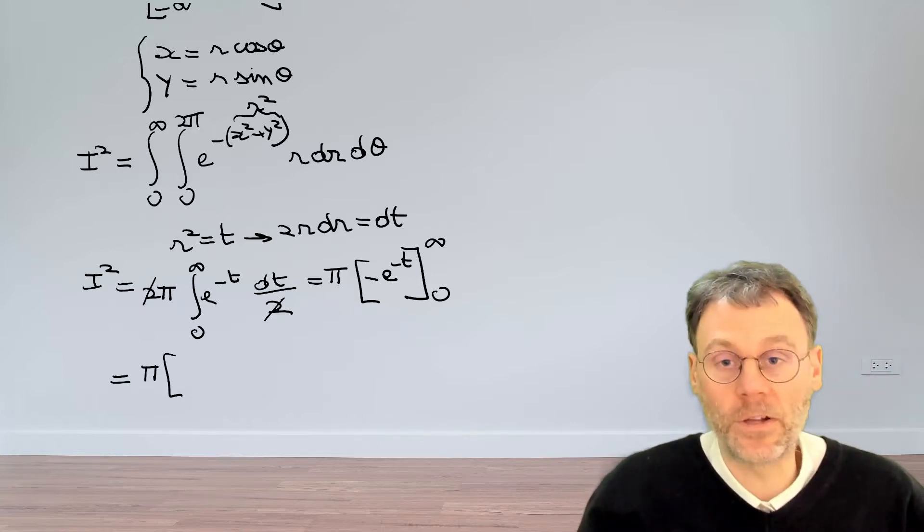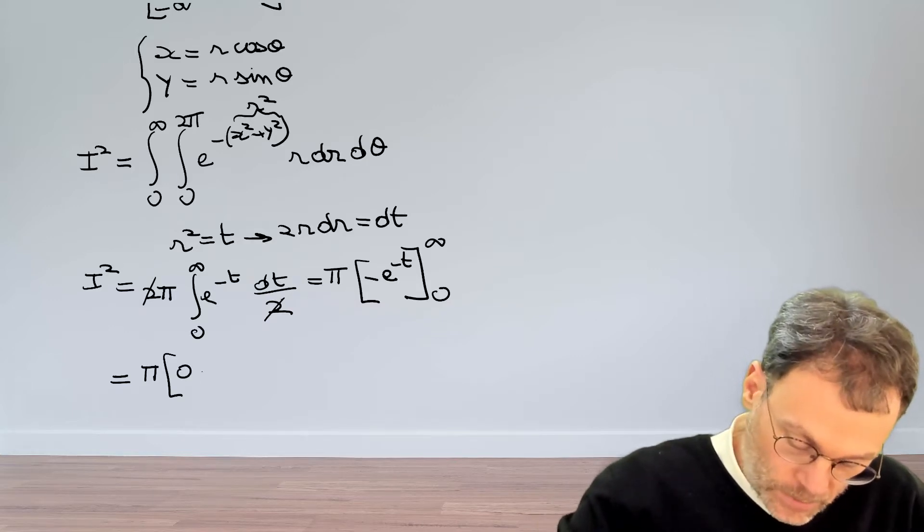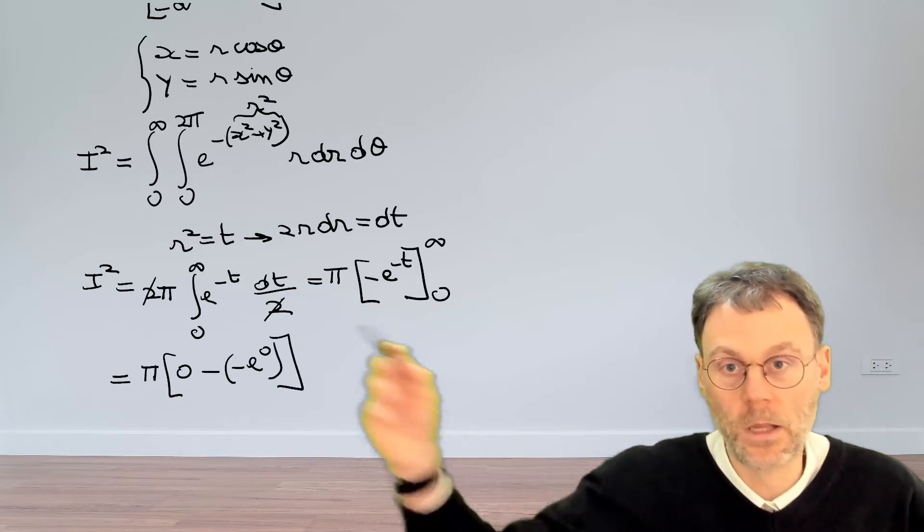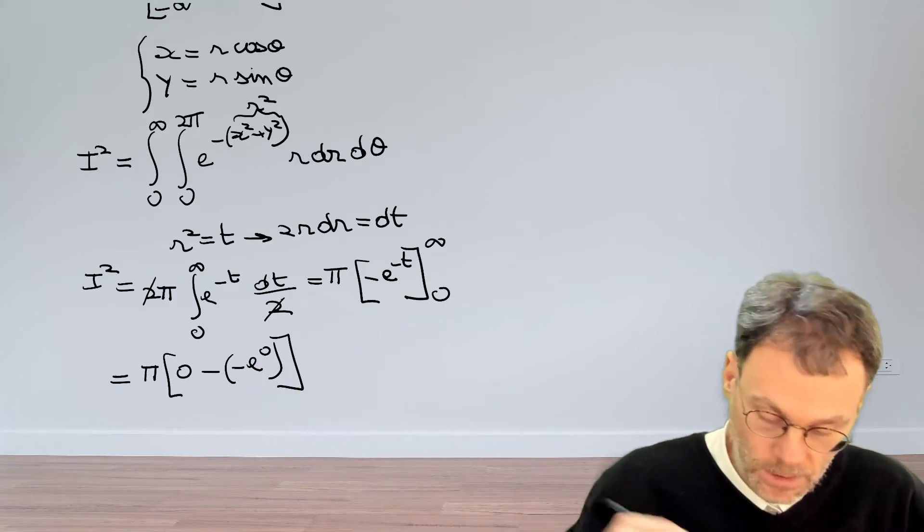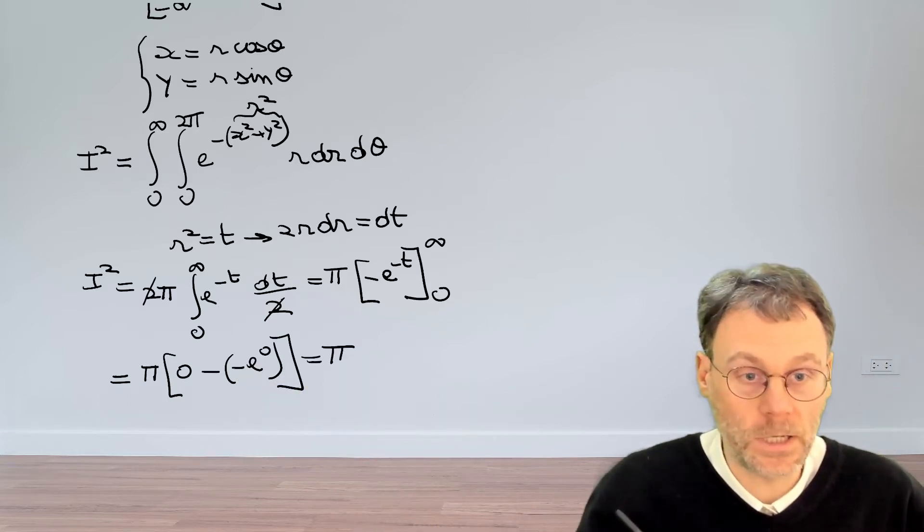So the result is pi. And then at infinity, this exponential becomes 0. And then we have minus minus exponential to the power of 0, which is 1 when the signs here cancel. The end result is that the integral squared is equal to pi.